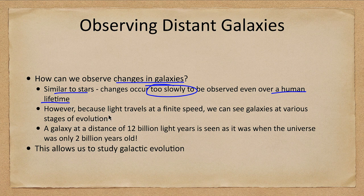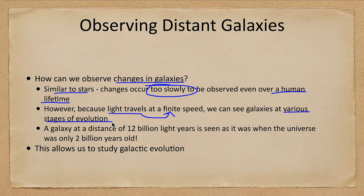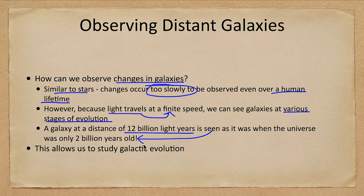However, because light travels at a finite speed, that means we can see galaxies at various stages of their evolution. A galaxy at a distance of 12 billion light years is seen not as it is today, but as it was when the universe was only two billion years old, and this helps us study galactic evolution.